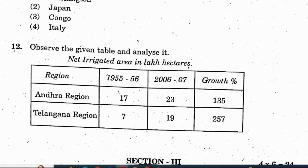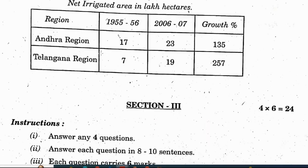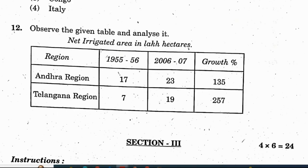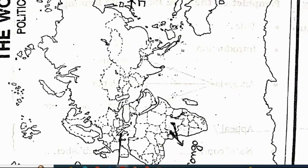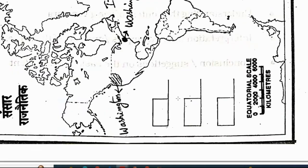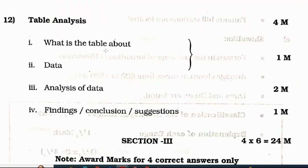Question 12: observe the given table and analyze it. Marking scheme: what is the table about and data — 1 mark; analysis of data — 2 marks; finding, conclusion, suggestions — 1 mark. Total 4 marks.